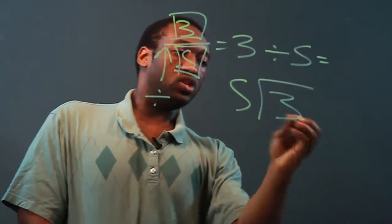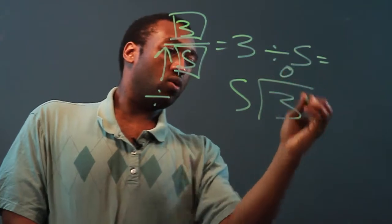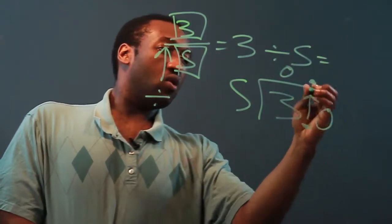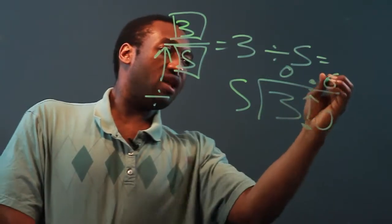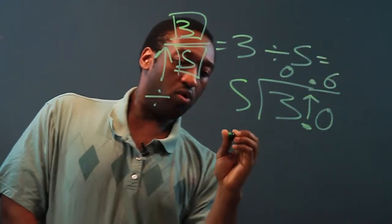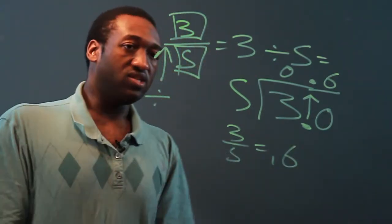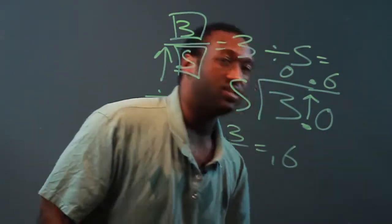If I do long division, 5 into 3 doesn't go. Let's add a decimal, bring it up, add a zero. 5 into 30 now becomes 6. So 3 fifths actually equals .6. Now let's do the same thing for sixteenths.